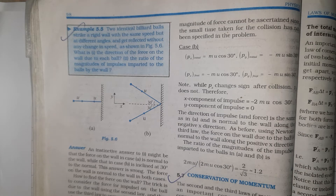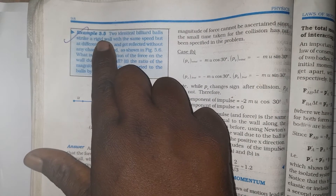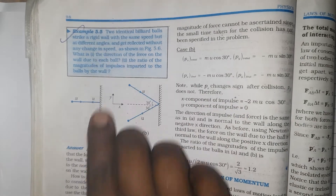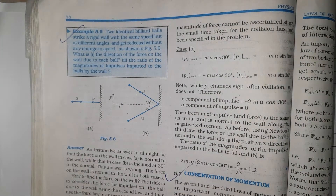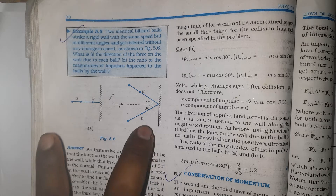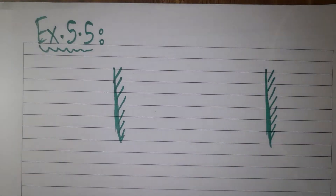Hello students, today we are going to learn an NCERT example problem. It is the 5th chapter, 5th problem, Class 11 Physics. Actually, there are 2 questions asked in this problem: what is the change in momentum, and what is the ratio of the change in momentum for both diagrams? We will learn them one by one.